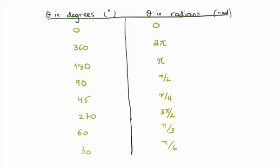Zero degrees corresponds to zero radians. 360 degrees is two pi radians. Half of 360 is 180 degrees, or pi radians. If we halve again from 180 to 90 degrees, we go to pi over two radians, and so forth thereafter.